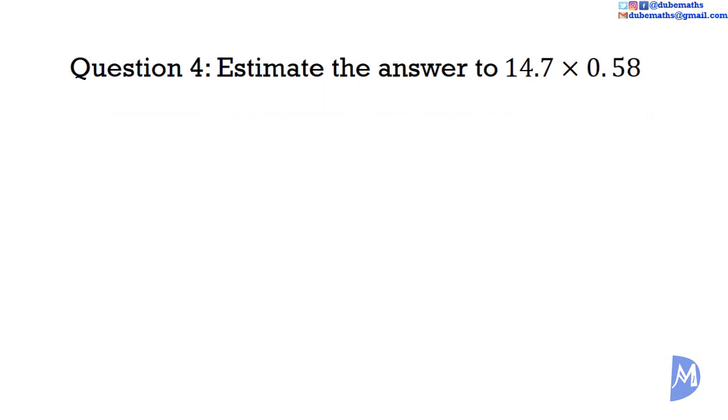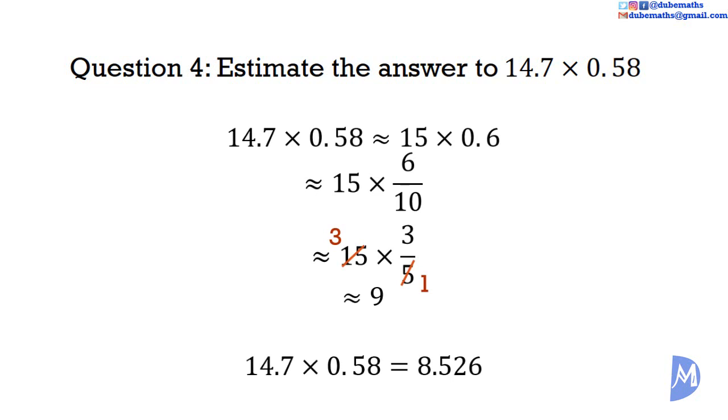Question 4. Estimate the answer to 14.7 multiplied by 0.58. I see 15 multiplied by 0.6. 0.6 is equal to 6 over 10 which is the same as 3 over 5. The 5 and the 15 would cancel. 3 multiplied by 3 is equal to 9. The actual answer 8.526. You were thinking 15 multiplied by 0.5 which is equal to 7.5. No problem.